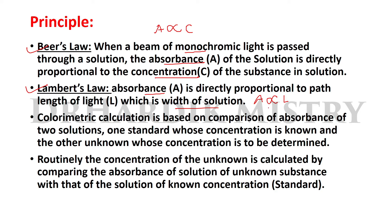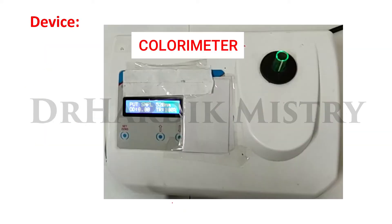Colorimetric calculation is based on comparison of absorbance of two solutions: one standard, whose concentration is known, and the other unknown, whose concentration is to be determined. The concentration of the unknown is calculated by comparing the absorbance of the unknown solution with that of the known standard solution.